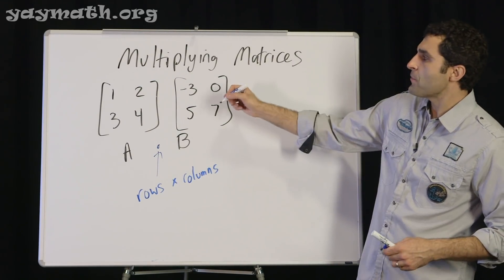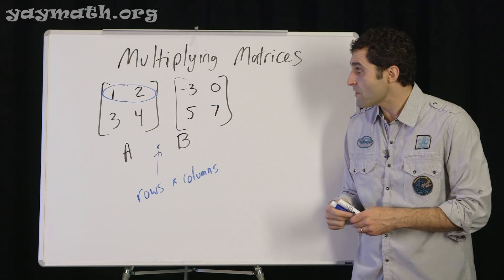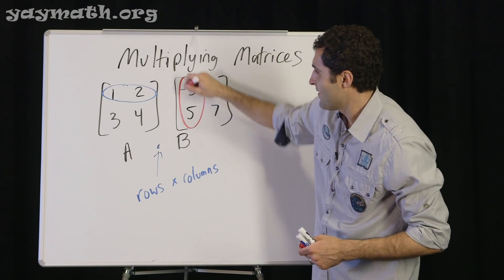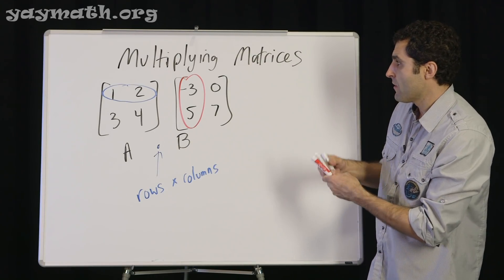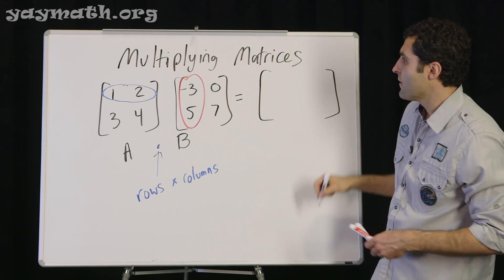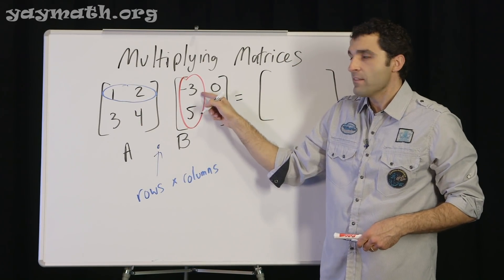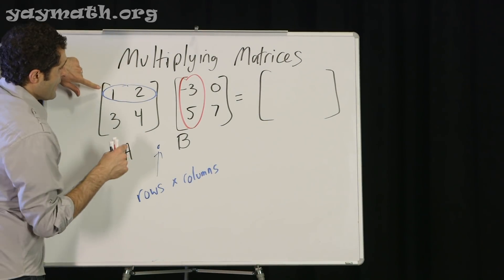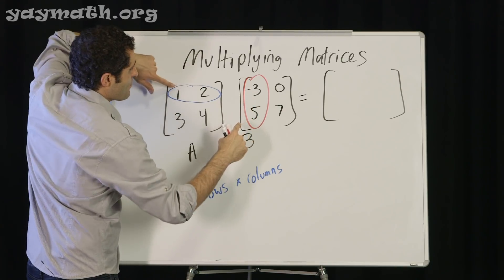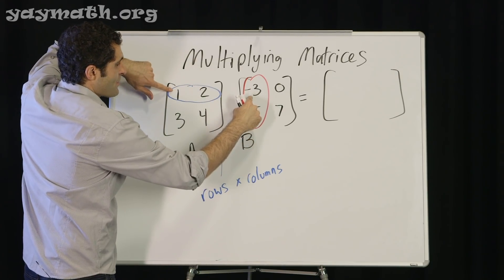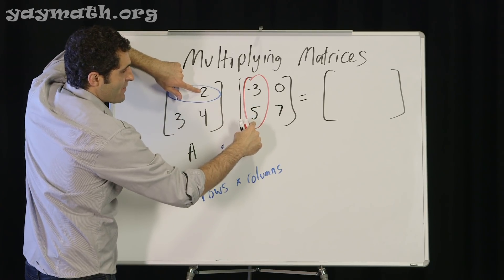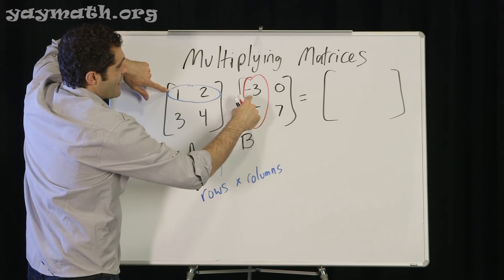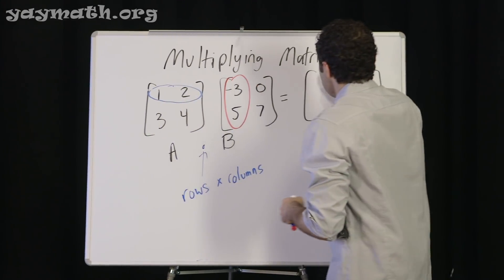First we pick a row. There it is, 1, 2. And we multiply it by this column. 1 times negative 3 plus 2 times 5. You'll notice that we go from this value, these two multiplied, plus moving down. So starting here, multiply these two, and add, multiplying these two. 1 times negative 3 is negative 3, plus 2 times 5 is 10. Negative 3 plus 10 is 7. That goes here.